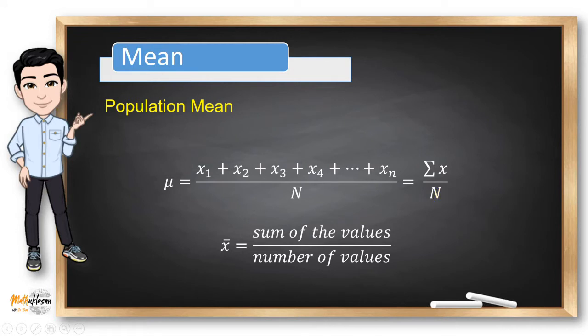If you're getting the mean of the population, all you need to do is to change x̄ to Greek letter mu and change small n to capital N to represent the size of the population.